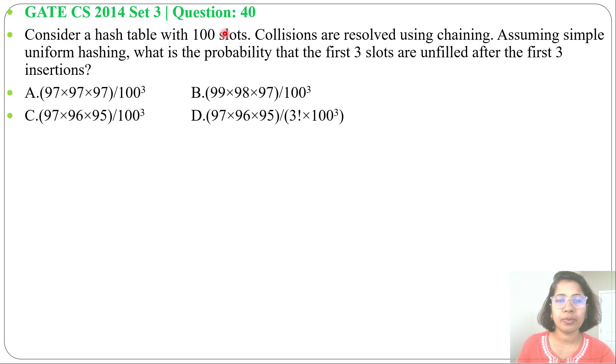Consider a hash table with 100 slots. Collisions are resolved using chaining. Assuming simple uniform hashing, what is the probability that first three slots are unfilled after the first three insertions?